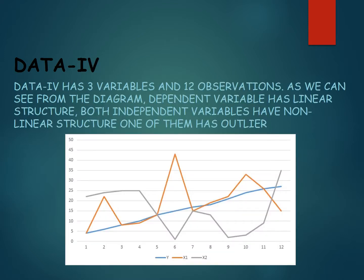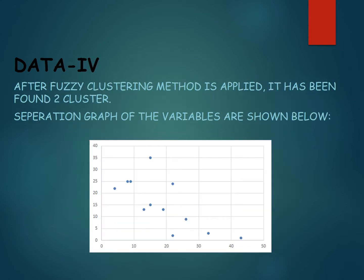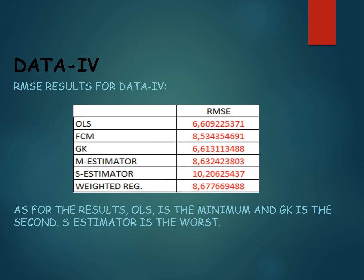Data 4 has three variables and 12 observations. As we can see from the diagram, the dependent variable has a linear structure, both independent variables have a non-linear structure, and one of them has an outlier. After the fuzzy clustering method is applied, two clusters are found. The RMSE results show that ordinary least squares is the minimum, Gustafson-Kessel is second, and the S-estimator is the worst.